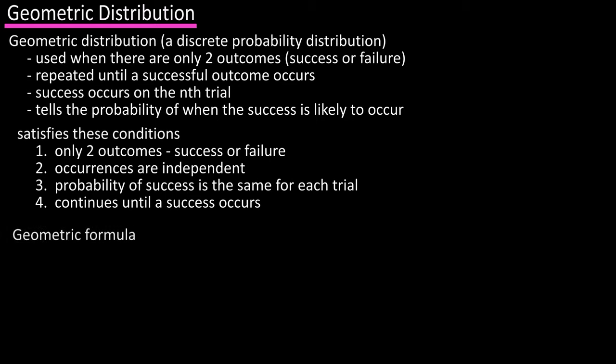The formula for the geometric distribution is probability of n equals p times the quantity one minus p raised to the n minus one. Let's break this formula down.